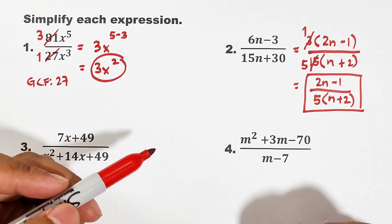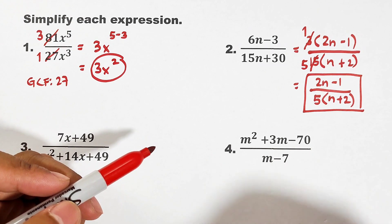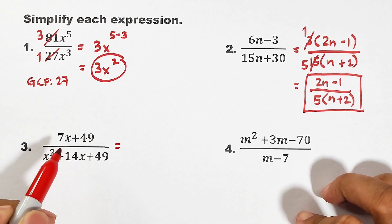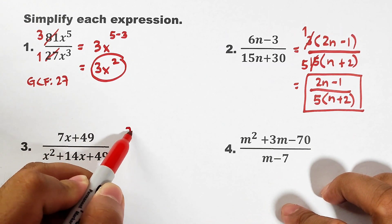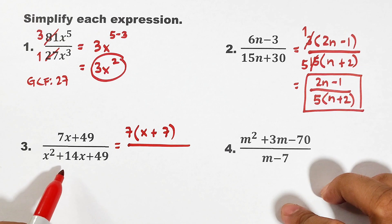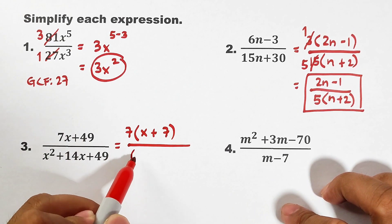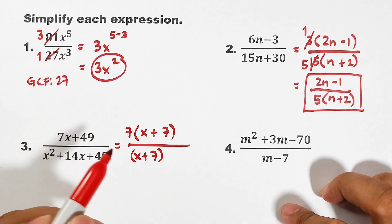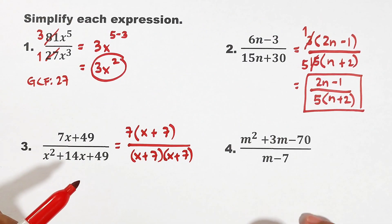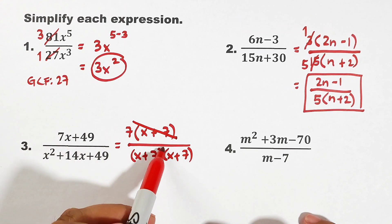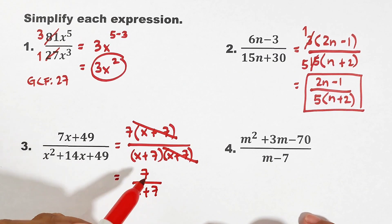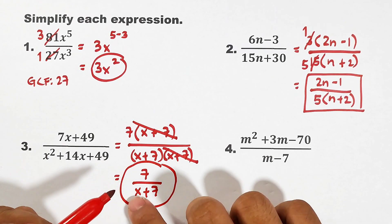Let's move on with item number three. For number three, factor out (7x plus 49) — their common factor is 7, so that is 7 times (x plus 7). For the denominator, this is a perfect square trinomial, so that is (x plus 7) squared. We can cancel one (x plus 7) from numerator and denominator, giving us 7 over (x plus 7). Note: we cannot eliminate the 7 and 7 in the final answer because they are separated by addition.